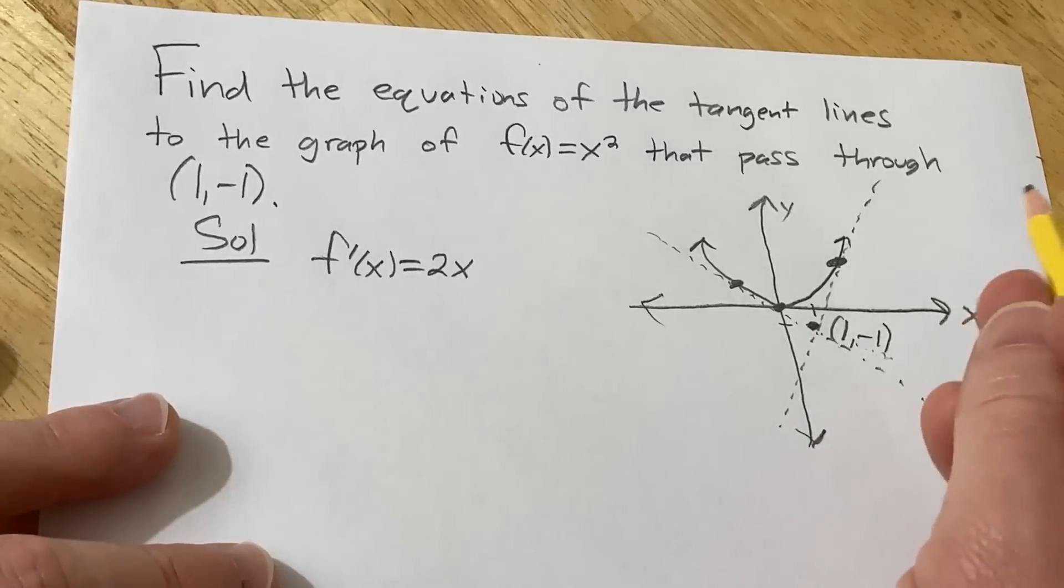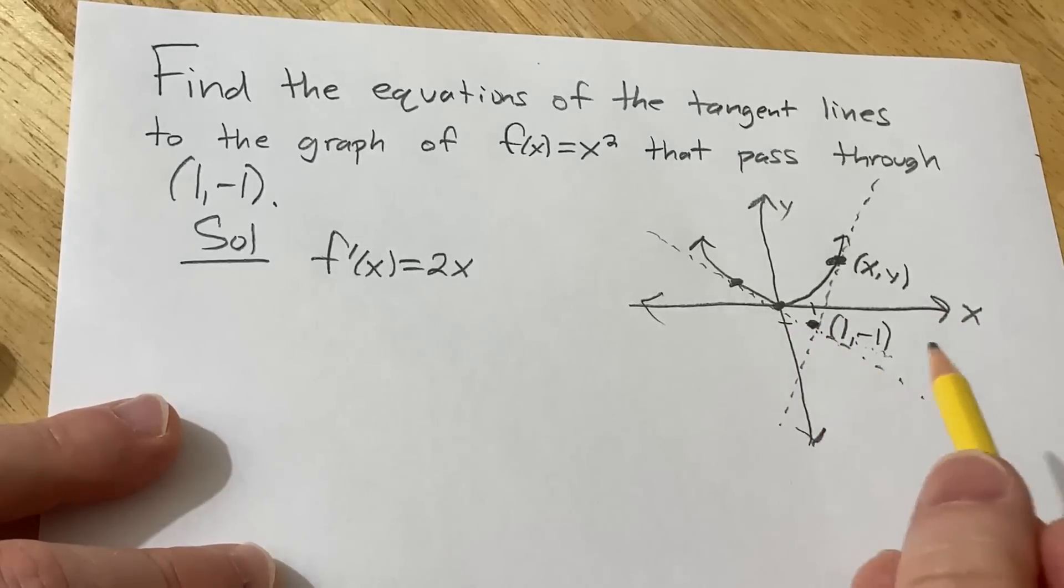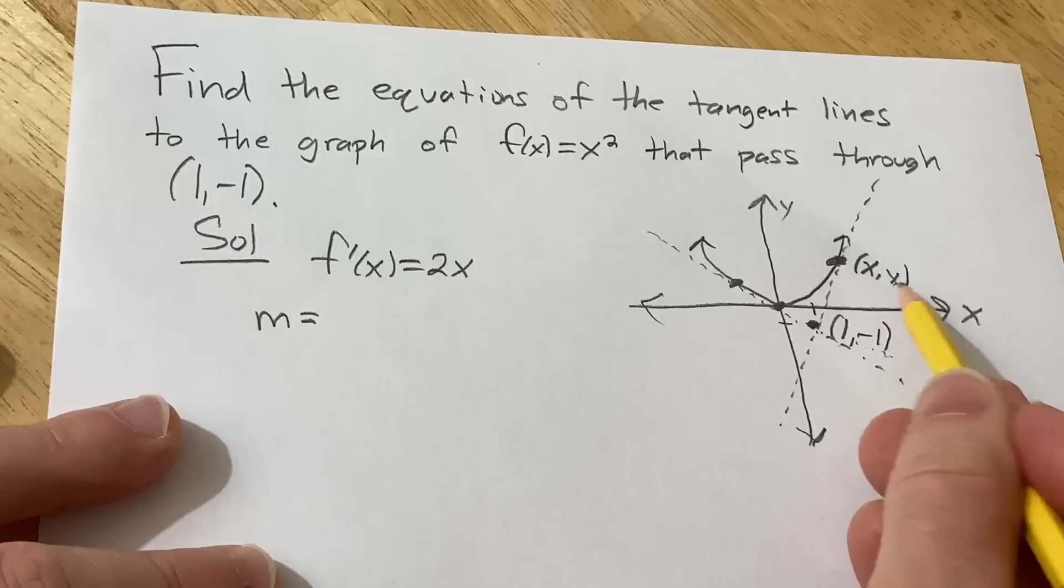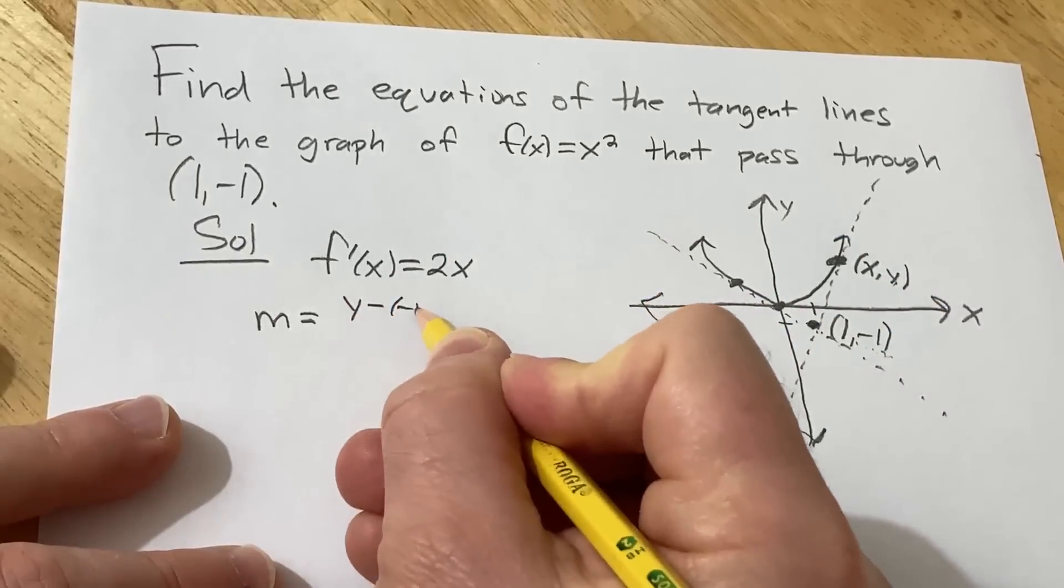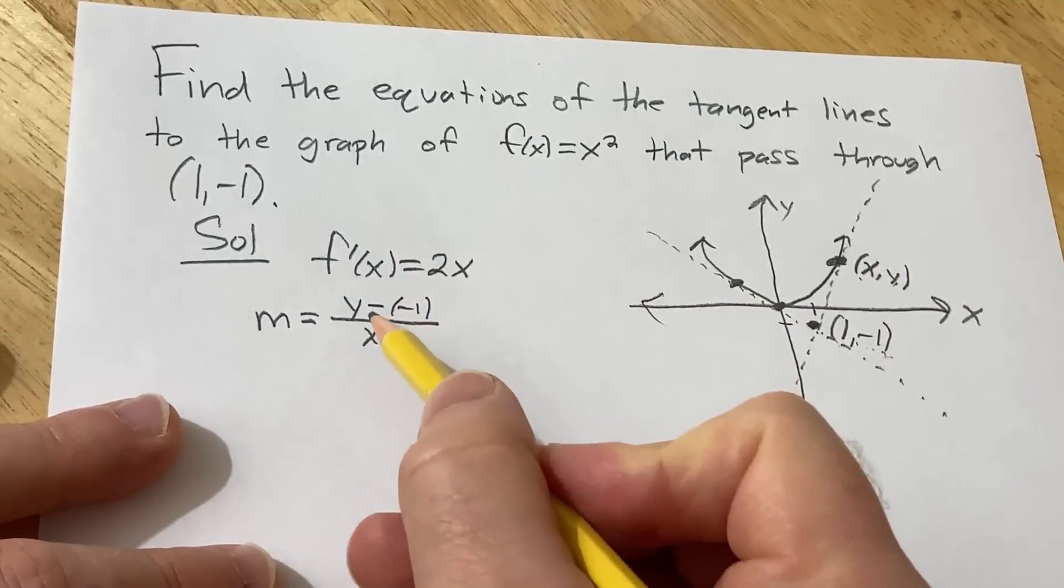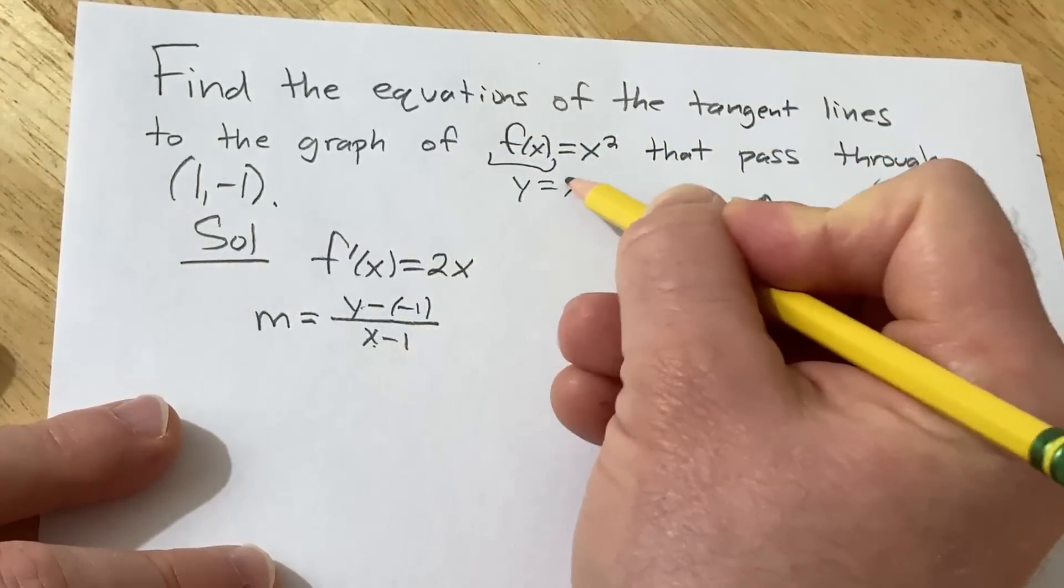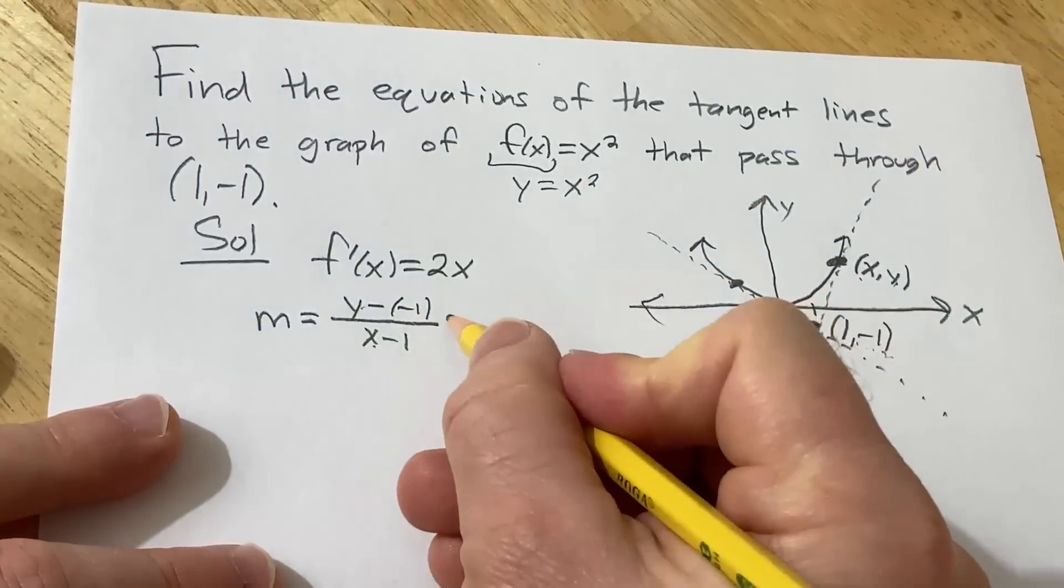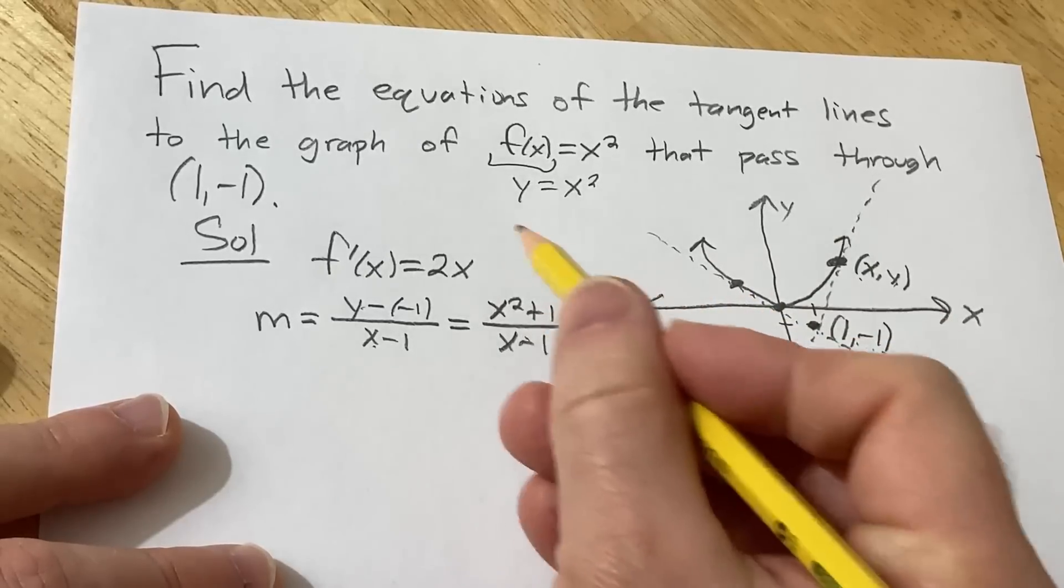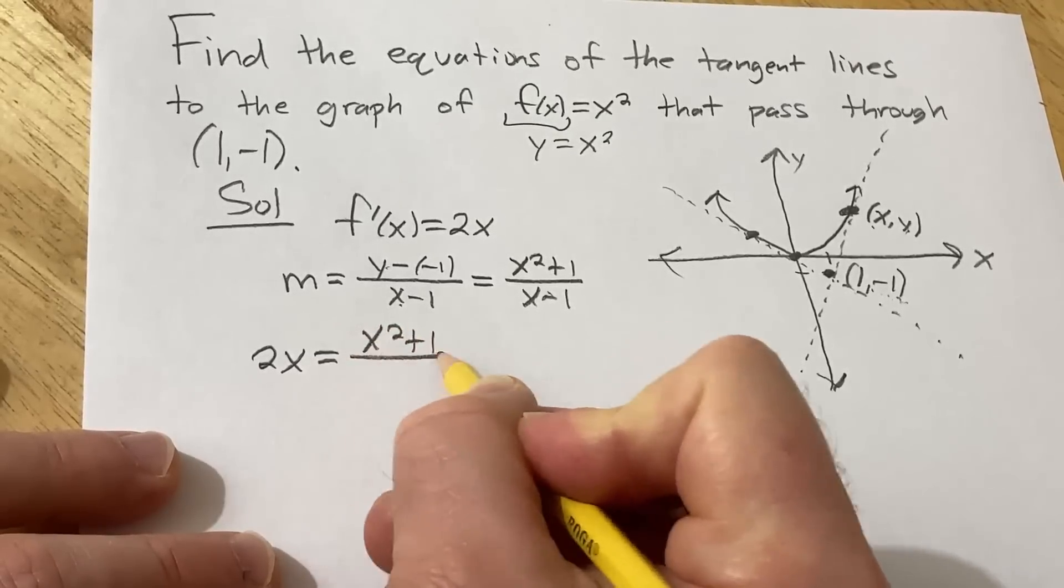So the trick is to somehow use this information in the problem to help us find the slope or to find the points. So what we'll do is we're going to give this a name. I'm going to call it (x, y). And recall that slope is also equal to rise over run. So m is equal to, well, you subtract this from this. So y minus negative one, right? You subtract the y's and then you subtract the x's, x minus one. But this is a problem because we have y's and x's, but we know what y is, right? This is the same as y. So y is actually equal to x². So we'll come over here and fill it in.